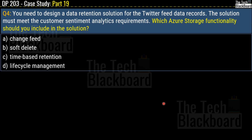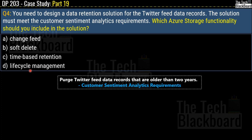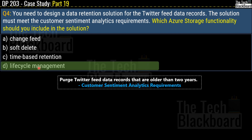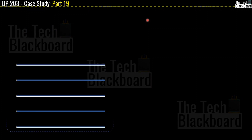Question number four: You need to design a data retention solution for the Twitter feed data records. The solution must meet the customer sentiment analytics requirements. Which Azure storage functionality should you include? Options are: change feed, soft delete, time-based retention, or lifecycle management. The requirement being fulfilled is to purge Twitter feed data records older than 2 years, from the customer sentiment analytics requirements section. The correct answer is lifecycle management.